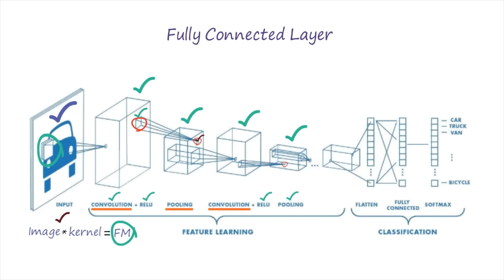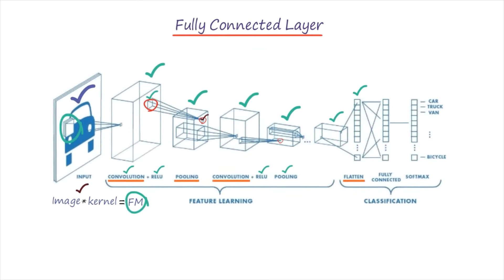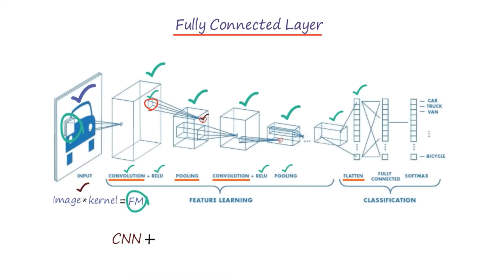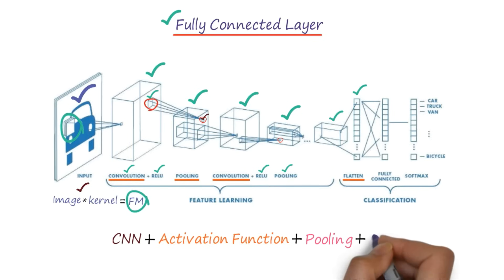The fourth step is known as the fully connected layer. After several rounds of convolution and pooling layers, the feature maps are flattened, meaning they are now ready to be fed into the neural network. In the fourth step, the functionality of ANN is used. Whatever features we have gathered so far, all those features will be given to the input layer, then we will have some hidden layers all connected, and then we differentiate or classify the particular image.